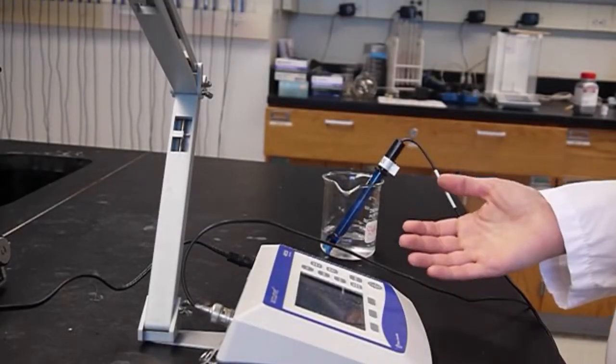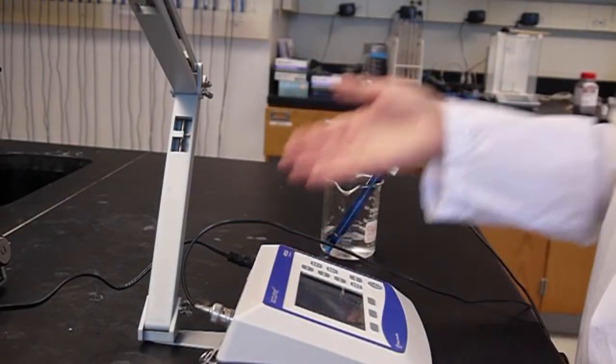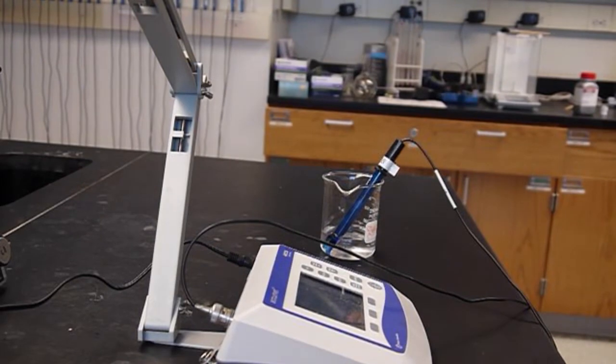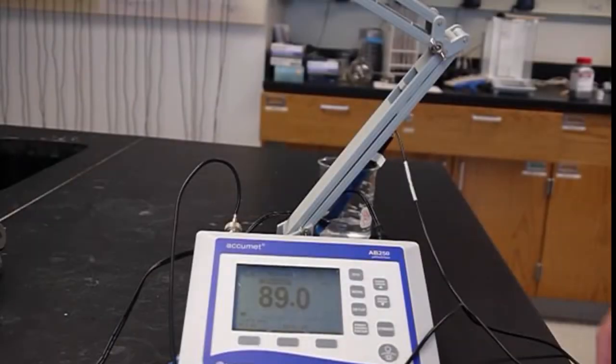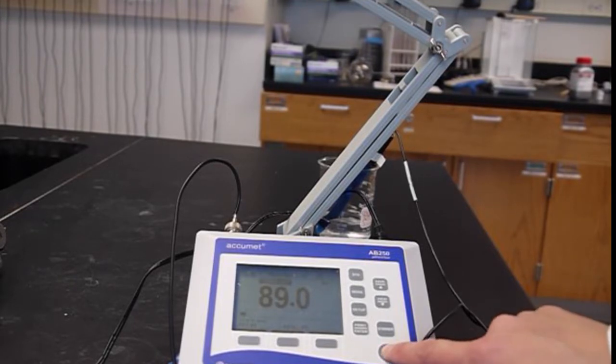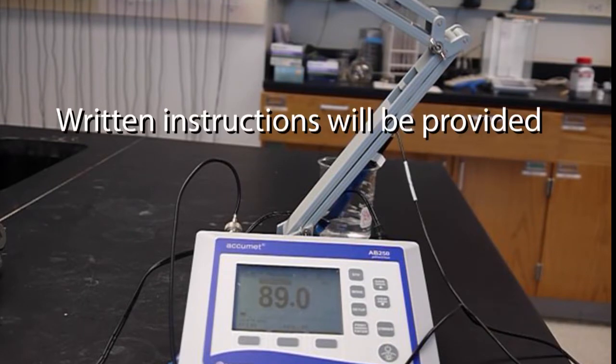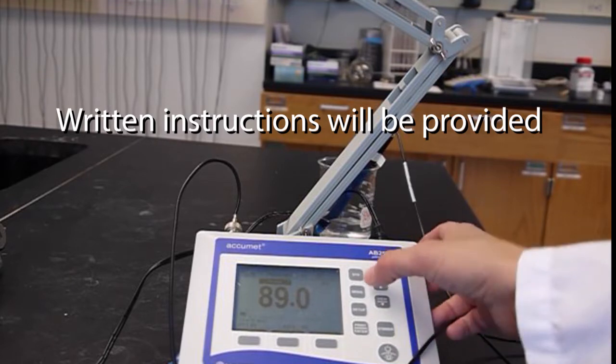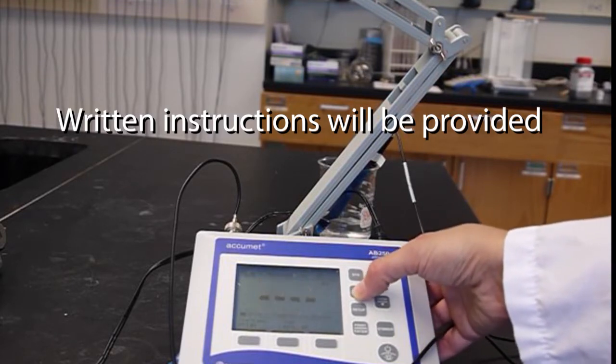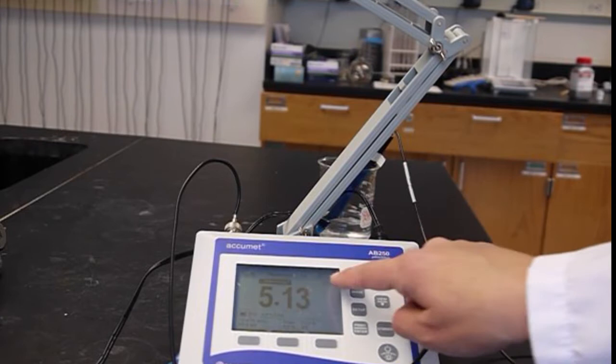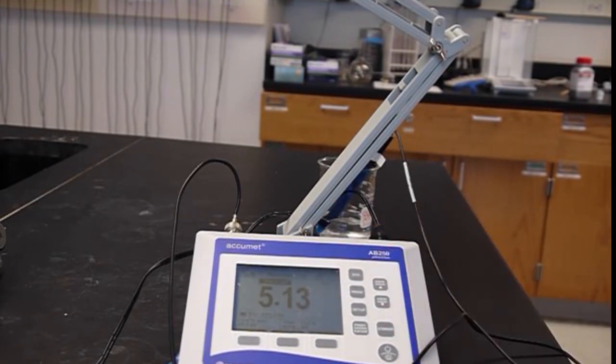So essentially the pH meter is ready to go. Make sure it's plugged in and then we should see some numbers here on the pH meter itself. If the pH meter is not on when you come into the lab you can press the power button here to turn the pH meter on. We want to make sure that the pH mode is selected so to do that you press mode until you see pH show up here on the screen.